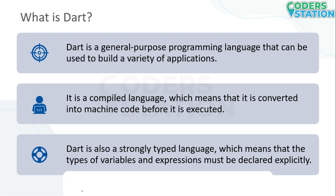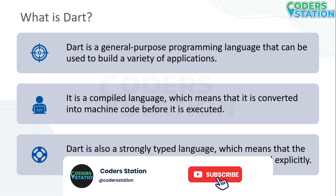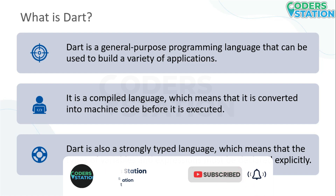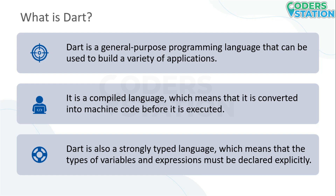What is DART? DART is a general-purpose programming language that can be used to build a variety of applications. It is a compiled language, which means that it is converted into machine code before it is executed. This makes DART programs faster than interpreted languages such as JavaScript. DART is also a strongly typed language, which means that the types of variables and expressions must be declared explicitly. This helps to prevent errors and make code more readable.